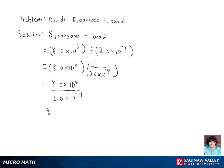Now we're gonna write this fraction as 8.0 over 2.0 times 10 to the sixth over 10 to the negative fourth.